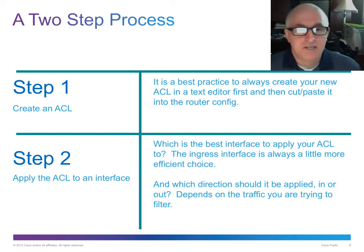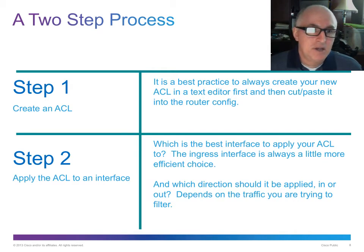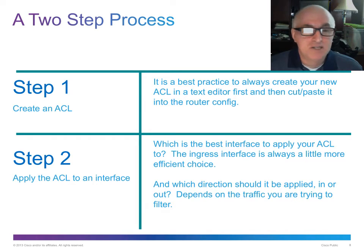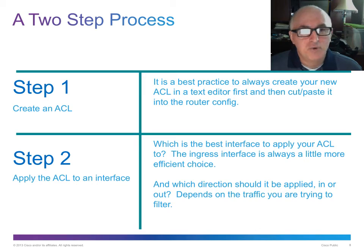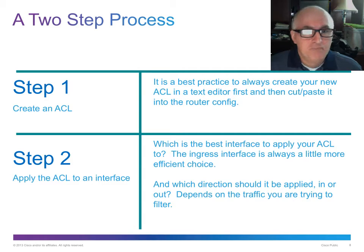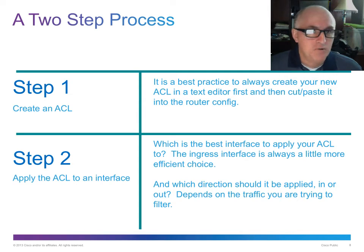Creating access lists is a two-step process. Step one is creating the access list — it's a best practice to always do this in a text editor like Notepad or Notepad++, where you can backspace, drag and drop things in a different order, and really think through the process of creating an effective ACL. Then step two, after you have your ACL cut and pasted into the router config, is to apply it to an interface.